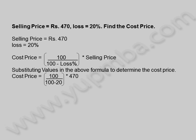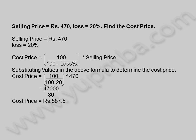Cost Price is equal to 100 divided by (100 minus 20) into 470, which is equal to 47,000 by 80. Cost Price is equal to 587.5 Rupees. Cost Price when Selling Price is 470 Rupees and Loss percentage is 20% is 587.5 Rupees.